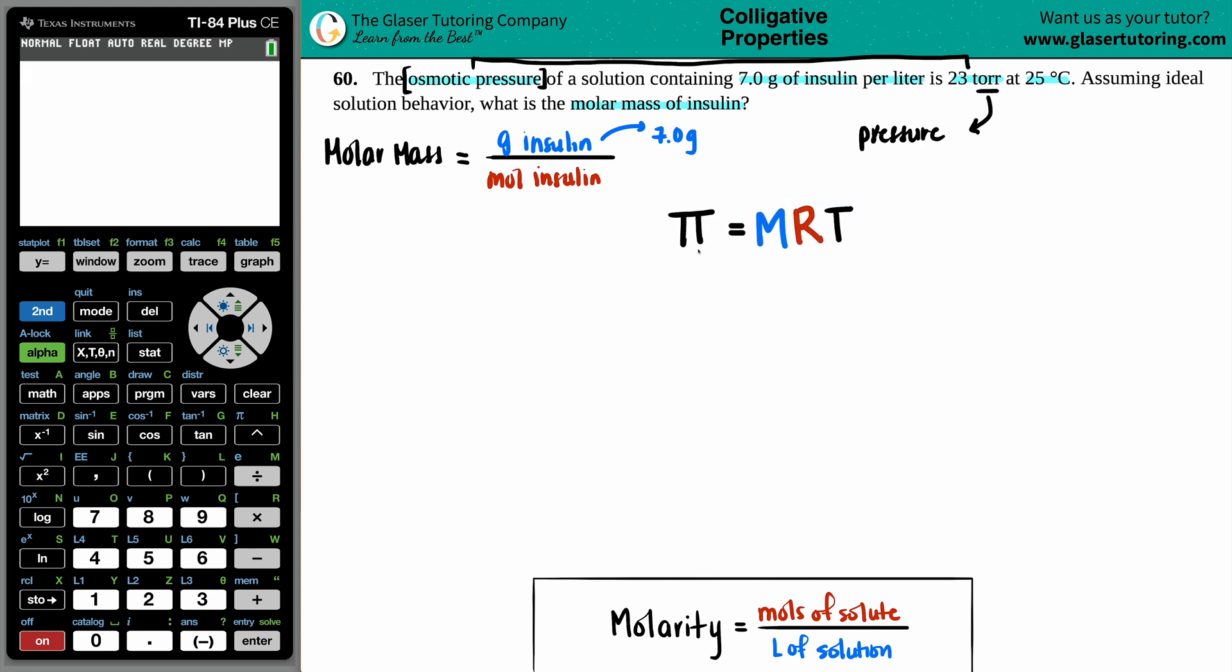So anytime that they say osmotic pressure, I know that I'm going to be using this formula because this capital pi, the lowercase pi is the pi that we know and love in math, 3.14. In chemistry, this is a capital pi, and this is the osmotic pressure. So they gave us 23 torr. Osmotic pressure is going to equal capital M. Capital M is the molarity. Did they give us a molarity in this question? I don't see any capital M numbers. We already used the 7 grams. So that's not it. 23 torr, that's the osmotic pressure. Liter is just a volume. And the 25 is the temp. So they didn't give us a molarity.